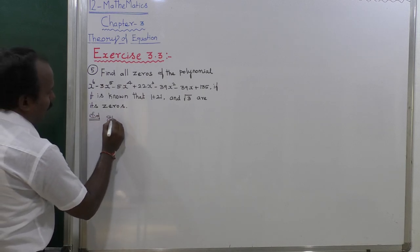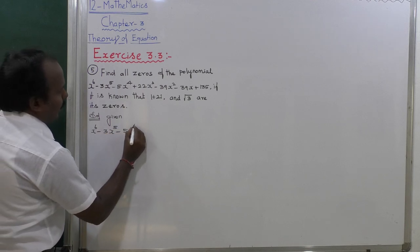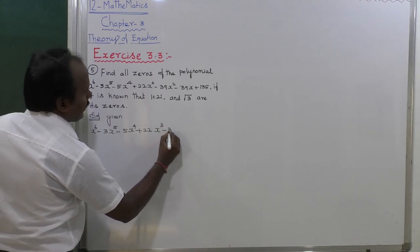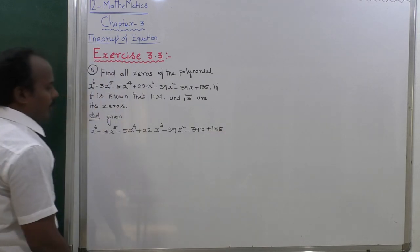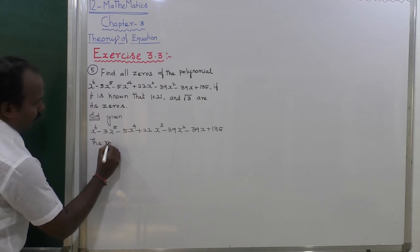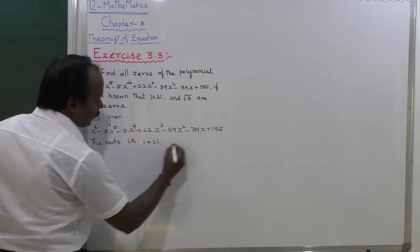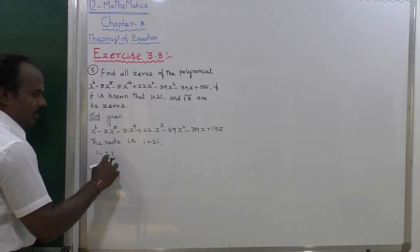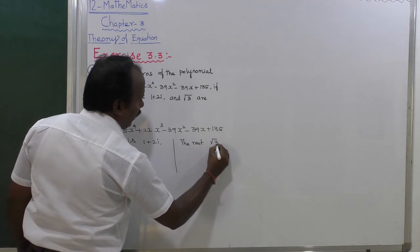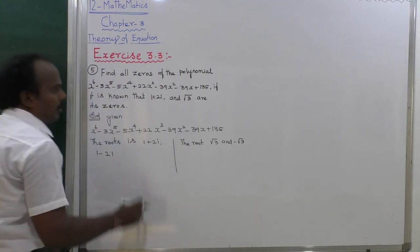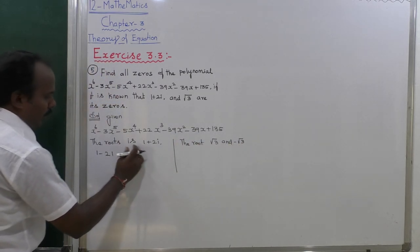The given equation is x power 6 minus 3x power 5 minus 5x power 4 plus 22x power 3 minus 39x square minus 39x plus 135. The given zeros are: 1 plus 2i (first root), 1 minus 2i (another root), root 3, and minus root 3. The another root is 1 minus root 3.